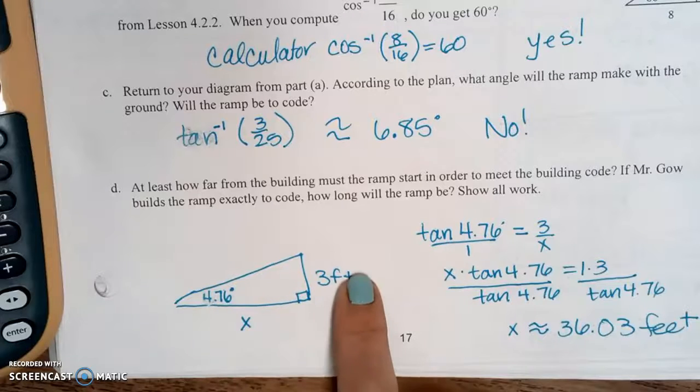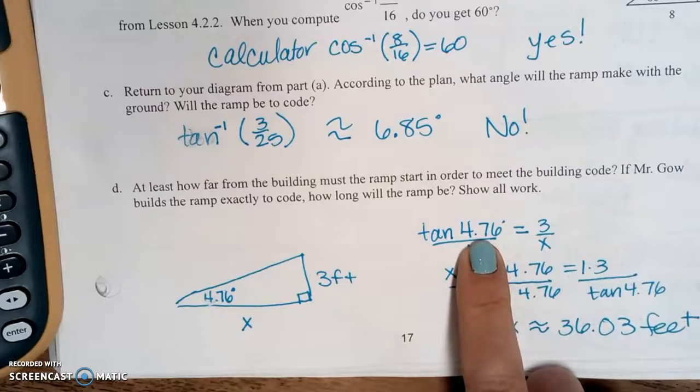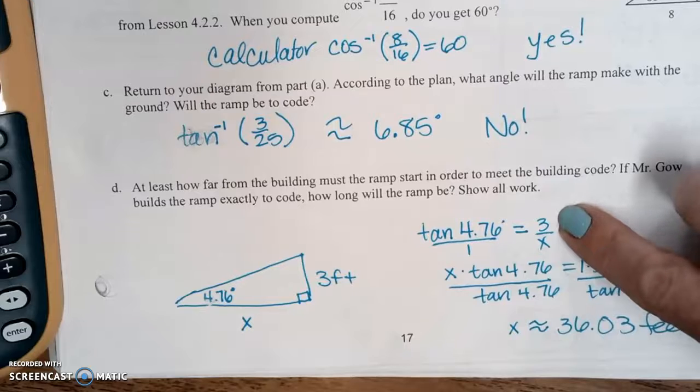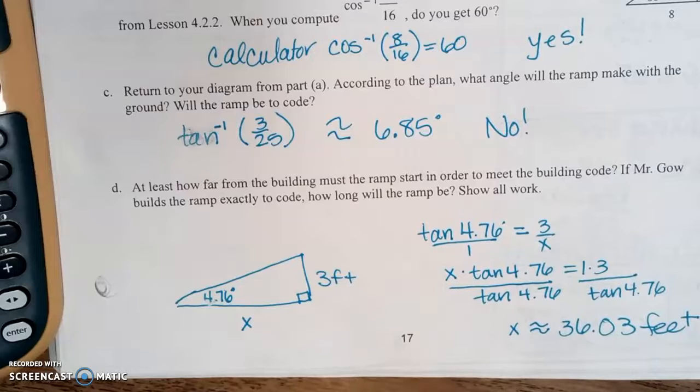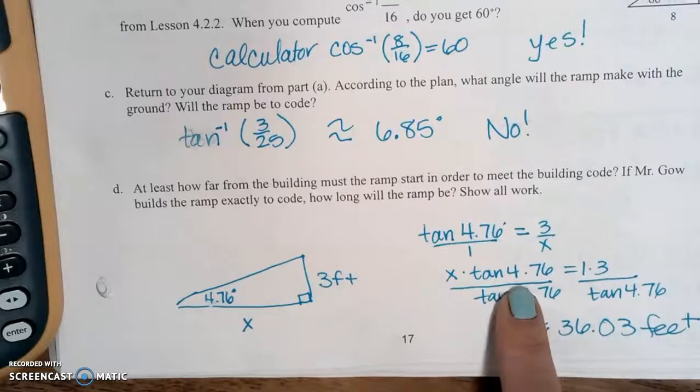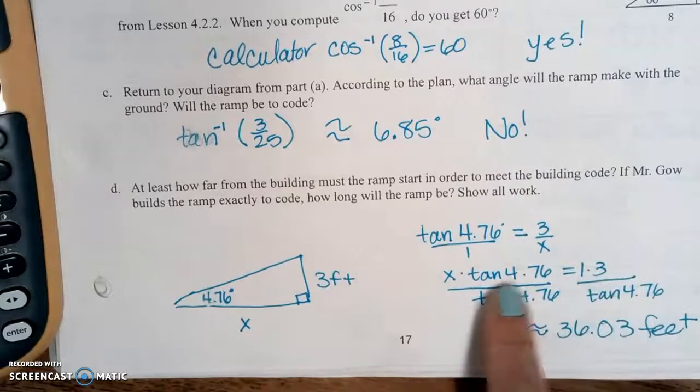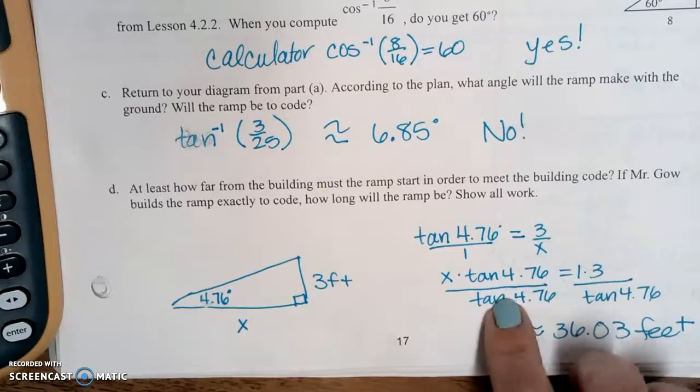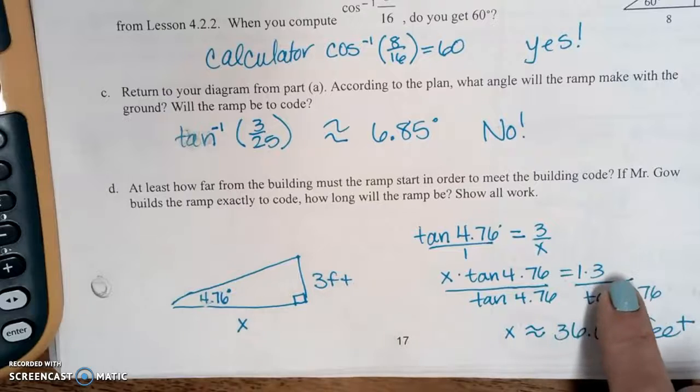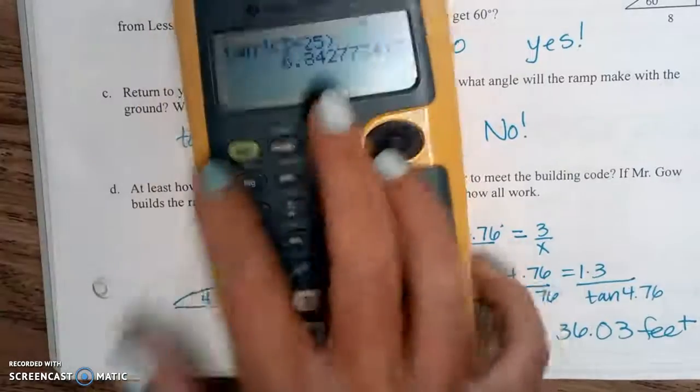That's how far away that ramp needs to start. So from that angle, we have opposite and adjacent. So we're going to use tangent again. So we're going to say the tangent of 4.76 equals the opposite, which is 3 over the adjacent, which is x. And that sets up our proportion by putting a 1 in the denominator right here. Now we can do our cross product. So we're going to multiply the x times the tangent of 4.76. Set that equal to 1 times 3. To get the x by itself, we divide both sides by the tangent of 4.76. So they'll cancel on the left. And then on the right, we're going to divide. So 1 times 3 is 3. And then 3 divided by the tangent of 4.76.